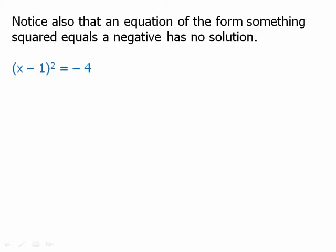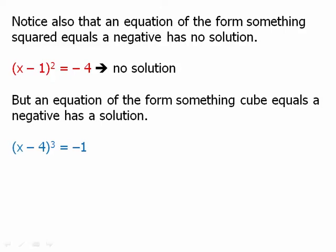Notice also that an equation of the form something squared equals a negative has no solution. For example, (x - 1)^2 = -4. Well, there's no way that we can square anything and get negative 4. So that's an equation that has no solution. But we could have something cubed equals a negative. That's perfectly fine. If something cubed equals negative 1, then that thing must equal negative 1, and then we can solve for x.